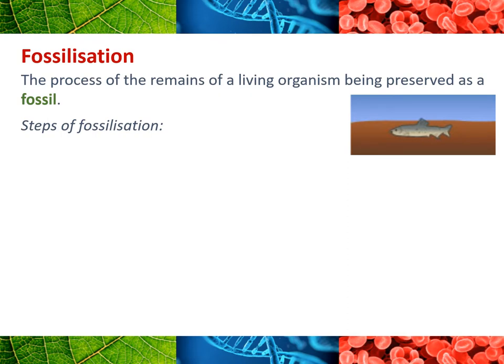What we're going to focus on is fossilization — this is the process of the remains of a living organism being preserved as a fossil. No doubt you've seen maybe some real fossils at museums or at least models of fossils. The first thing to know is the steps of fossilization — how fossils form. The odds are against fossilization. 99.999% of living things that die do not become fossils. So the fossils that have been found are extremely rare because it's really hard for them to form.